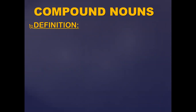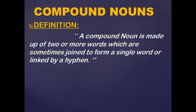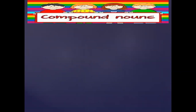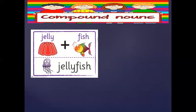Here is the definition of a compound noun. A compound noun is made up of two or more words which are sometimes joined to form a single word or linked by a hyphen. For example, 'swimming pool' — there is a space between swimming and pool. A hyphenated word is joined with a hyphen.